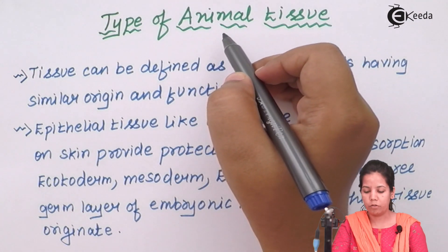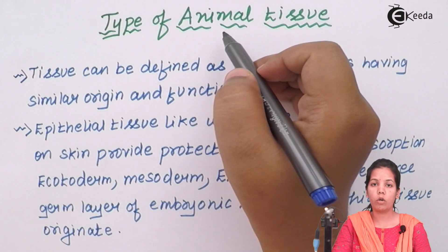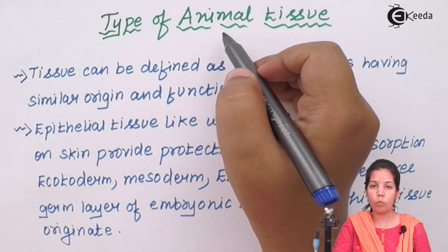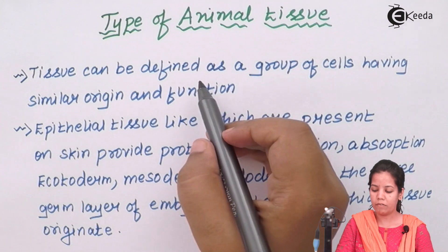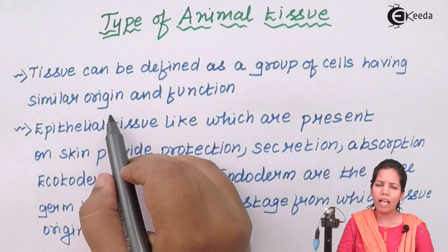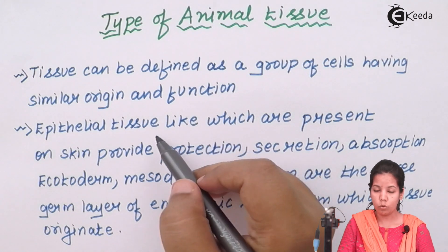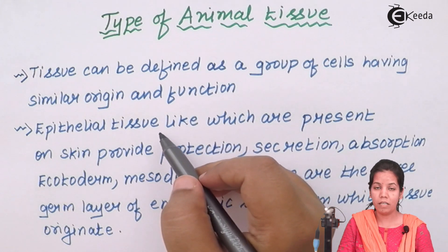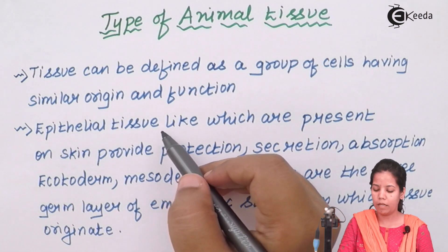Study of animal tissues. Tissues are nothing but a group of cells working together to carry out a particular function. Tissues can be defined as a group of cells that have a similar origin and similar function. For example, the epithelial tissue will have similar origins, almost similar structure, and will carry out a simple and similar function.